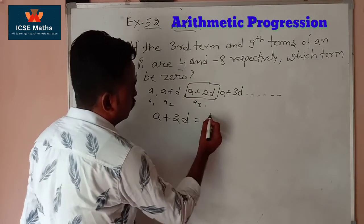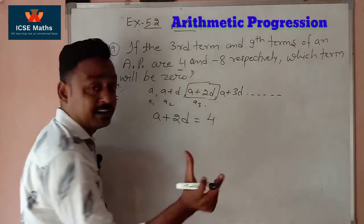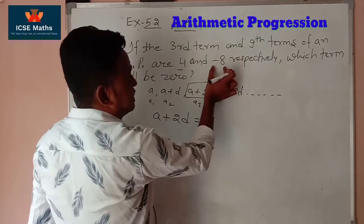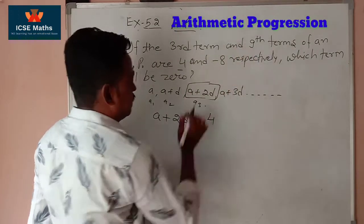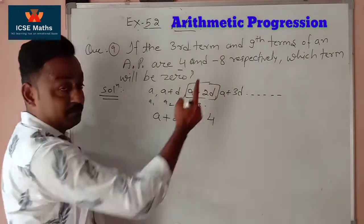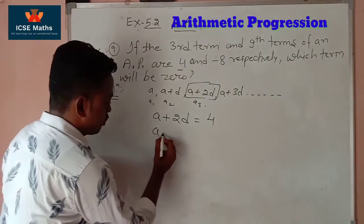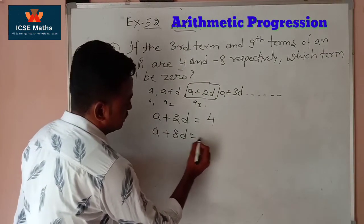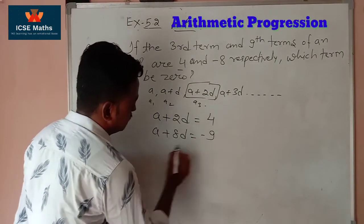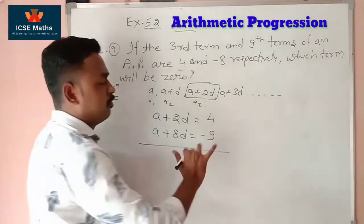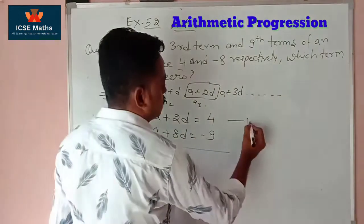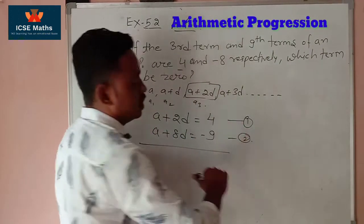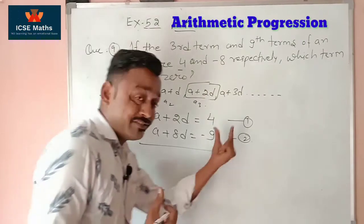Now the 9th term: one less than 9 gives us a+8d, and this equals minus 8. So equation 2 is: a + 8d = -8. Now we will solve both equations together.